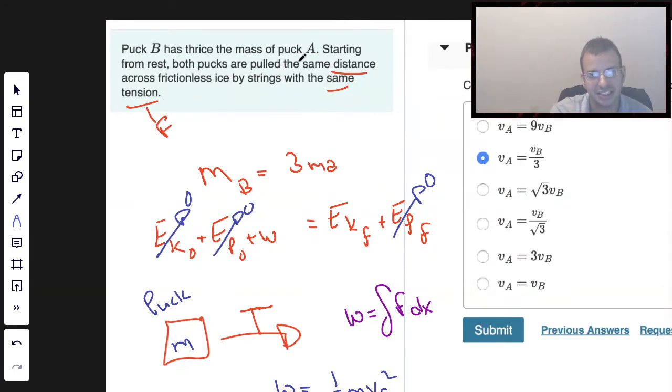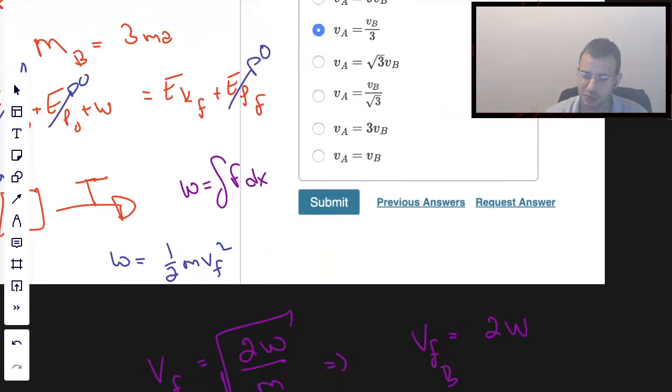And since it has the same distance and the same tension, it just means that they're both going to be the same. So same force, same distance or same displacement means you're going to have the same work. So that's why I said the work was the same for both of these.